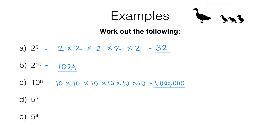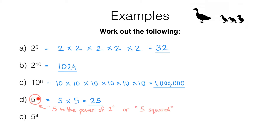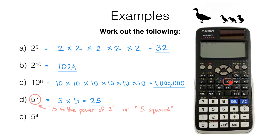In question D we are working out 5 to the power of 2, which simply means 5 times 5, which is 25. It's worth noting that raising something to the power of 2 is something we do so often that we could call this 5 to the power of 2, or more commonly we call it 5 squared. The calculator has a special x squared button for it, just next to the x to the power of button.